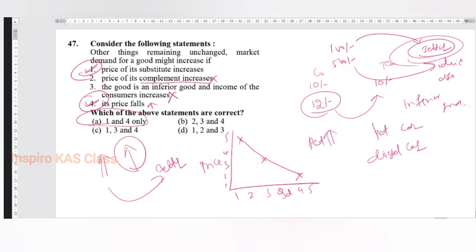Expansionary monetary policy - you are putting more money into the hands of the people. Since you are putting more money into the market, that leads to demand-pull inflation. Raising interest rate is totally wrong - if you raise the interest rate, there is no money; you are basically controlling inflation. Raising interest rates means people do not want to take loans - it is a measure to control inflation, not a cause. So option 5 is gone.